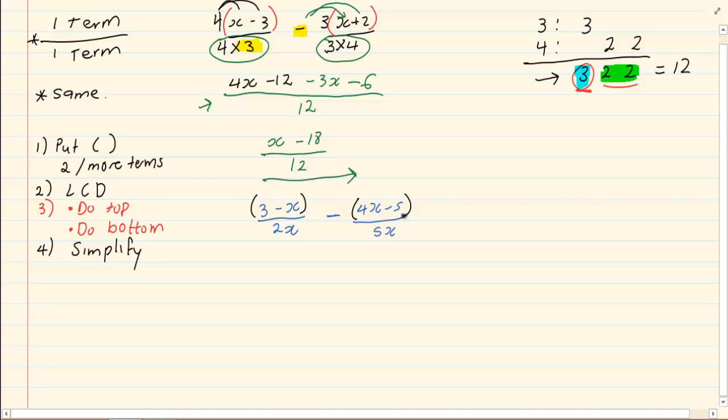First, we are going to put brackets around the expressions that have two terms. How do we work out our LCD? 2x is broken down into 2 times x. 5x is broken down into 5, I cannot put it under the 2, and x. Giving me an LCD of 2 times 5 times x which is equal to 10x.